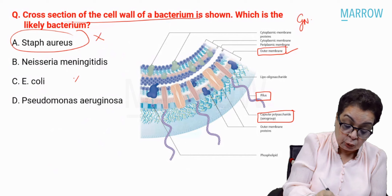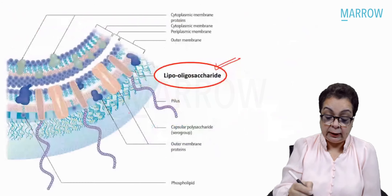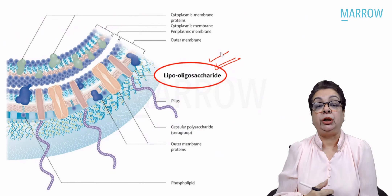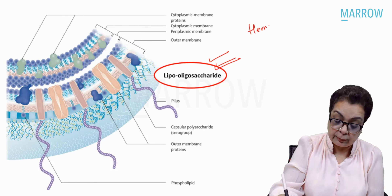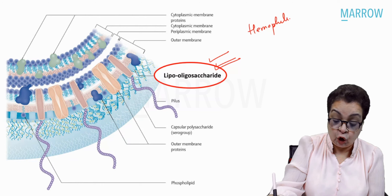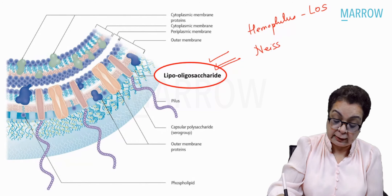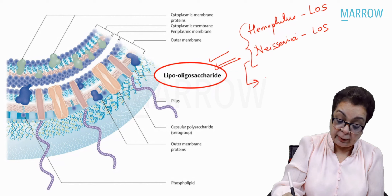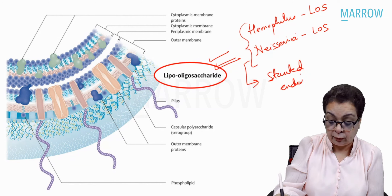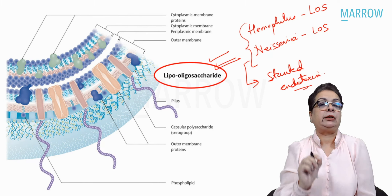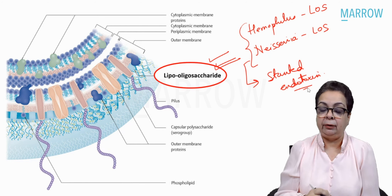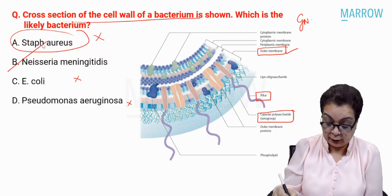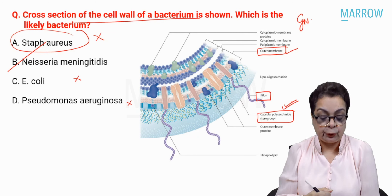The biggest hint is the lipo-oligosaccharide. Both Neisseria species have lipo-oligosaccharide in their cell wall — a stunted endotoxin molecule, not called LPS but lipo-oligosaccharide. E. coli and Pseudomonas have full LPS. So the answer is Neisseria meningitidis, which also definitely has a capsule.